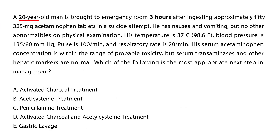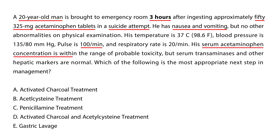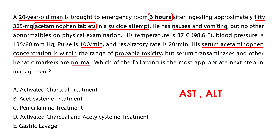A 20-year-old man is brought to the emergency room three hours after ingesting approximately 50 tablets of 325 mg acetaminophen in a suicide attempt. He has nausea and vomiting but no other abnormalities. Temperature is normal, blood pressure is normal, pulse is elevated at about 100, and respiratory rate is 20. Serum acetaminophen concentration is within the range of probable toxicity, but serum transaminases AST and ALT and other hepatic markers are normal. Because it's within four hours and he possibly has acetaminophen tablets still in his GI tract, you give both N-acetylcysteine and activated charcoal.